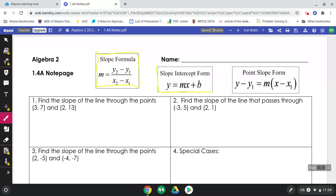The next one is slope intercept form, which is y equals mx plus b.